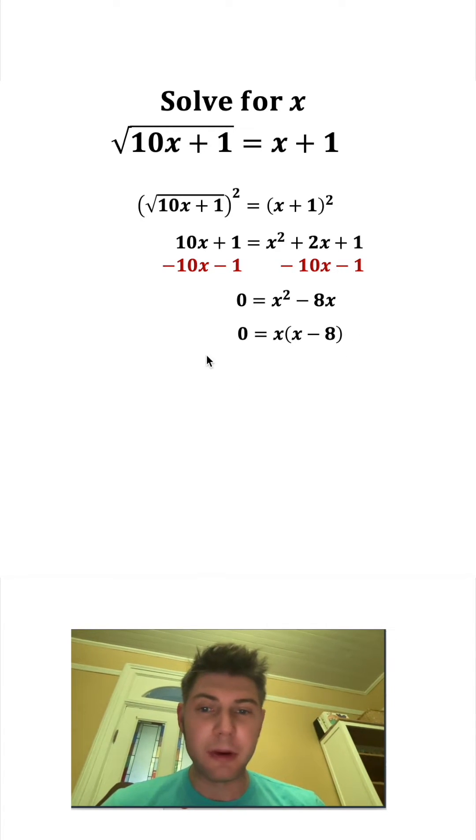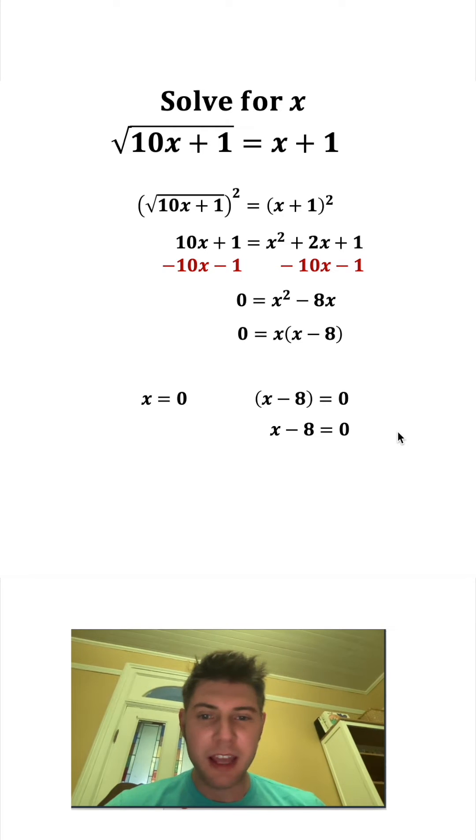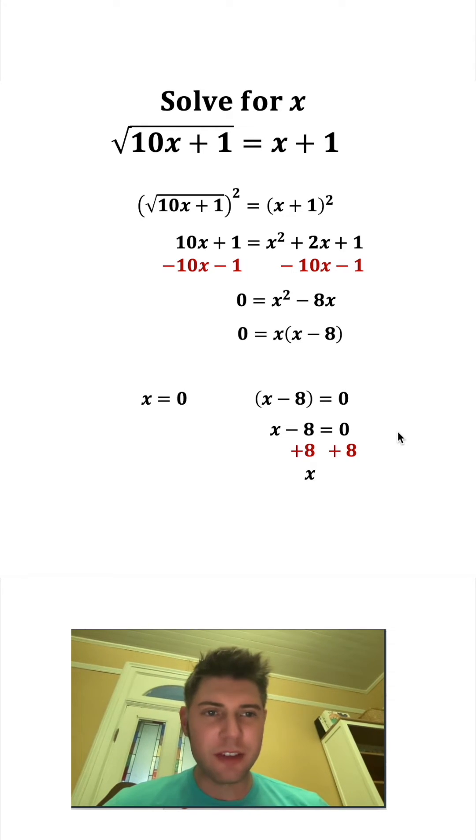So from here, we have two things being multiplied to give us 0. That means either one of them is equal to 0. This x equals 0 is already done, but for this x minus 8, let's get it out of the parentheses and then add 8 to both sides, and that gives us x equals 8.